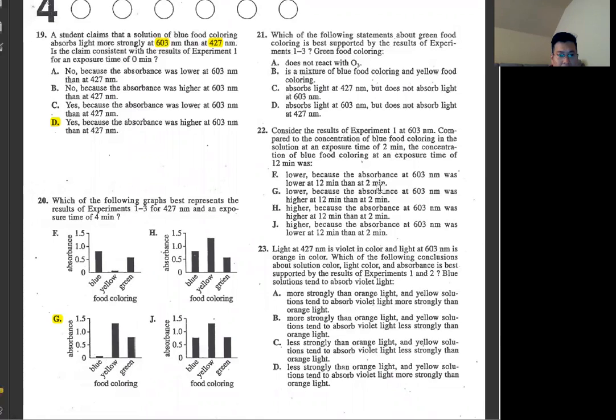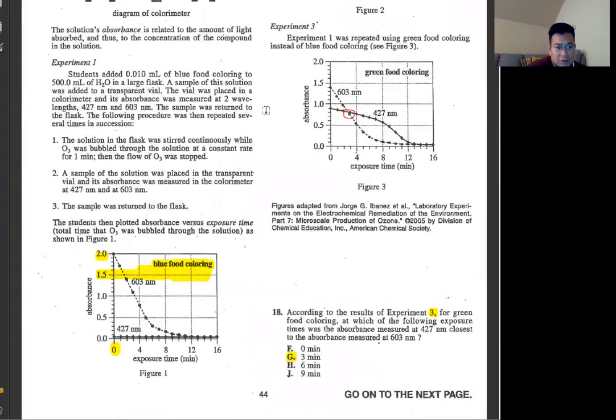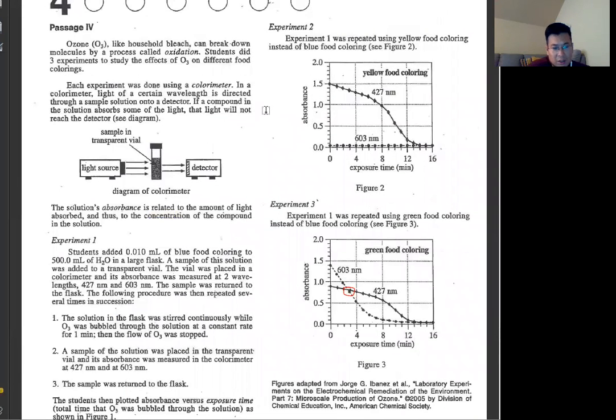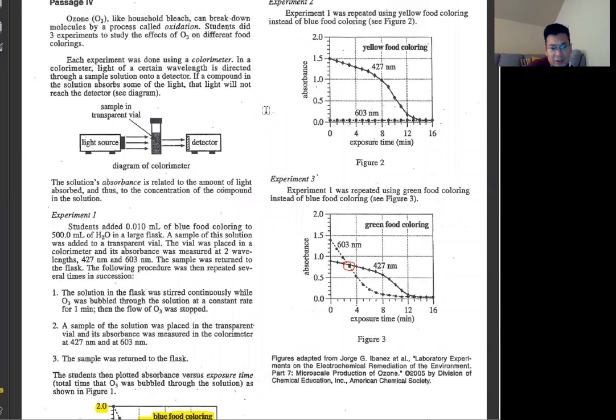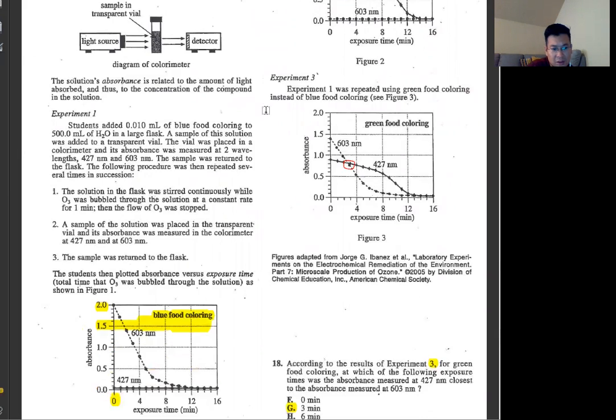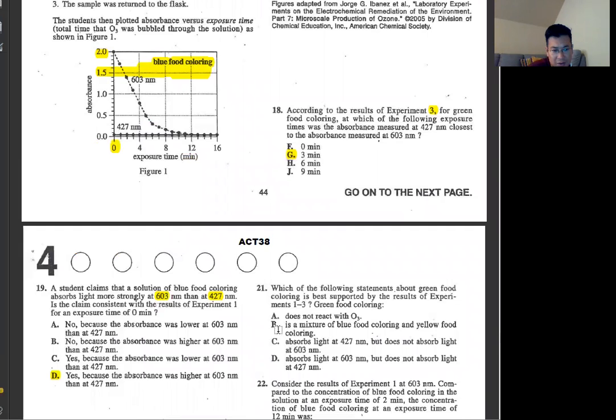Number 21, which of the following statements about green food coloring is best supported by the results? Green food coloring is blue plus yellow, basically. If you see the results at 603, the first one is 2.0, and experiment figure 2 is almost 0. So it averages out a little bit less than 1.5. It makes sense with this one too. And 427 is the exact same result. So it's the average of these two, a mixture of these two, which needs to be J.